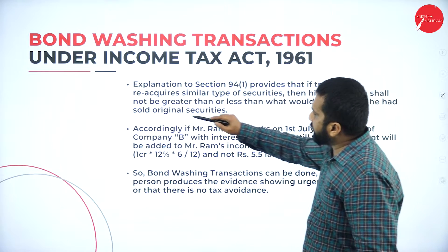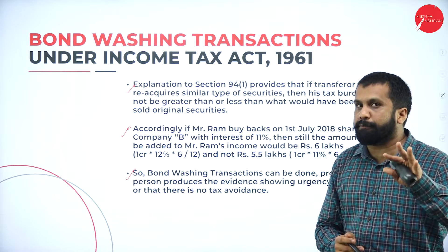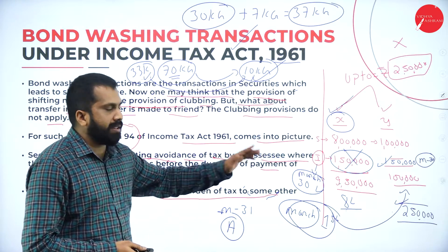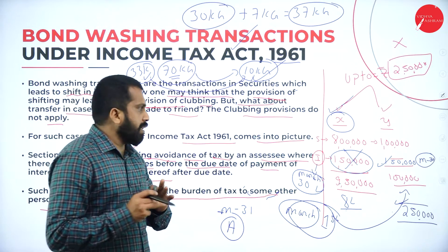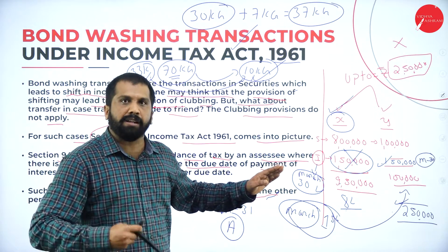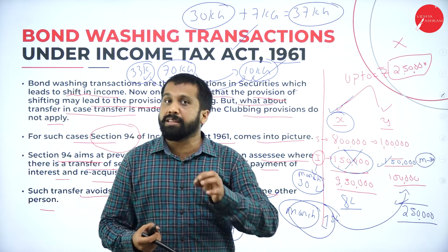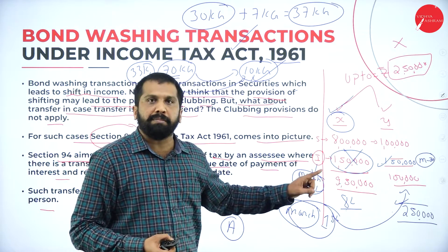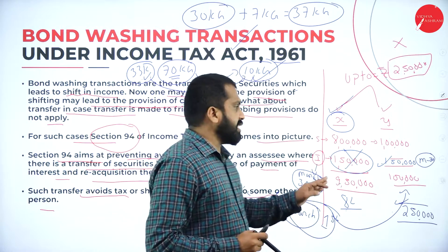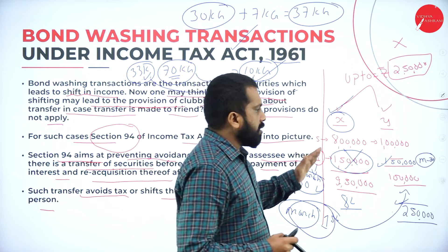That is the only logic you are supposed to learn. Same example is given — whatever I explained, same thing. All this explanation you are supposed to write in your exam for 5 marks. This is all about your bond washing system, hope you understood. Just remember this example — it is more than sufficient for your bond washing. Before due date, if you transfer your debenture to your friend to avoid tax and later take it back, still you are only supposed to pay tax because we have Section 94 — the bond washing system.